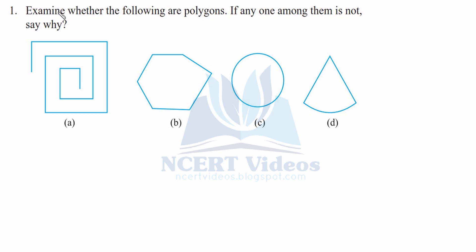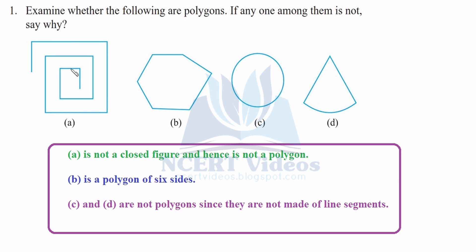Question one: examine whether the following are polygons; if anyone among them is not, say why. For the first figure, counting one through eleven line segments, the line segment stops there — it is an open figure, not a closed figure, and hence it is not a polygon.